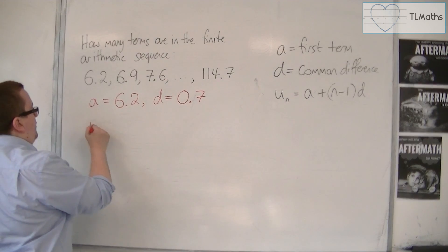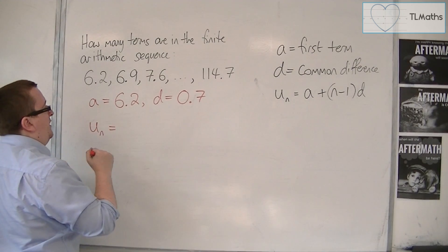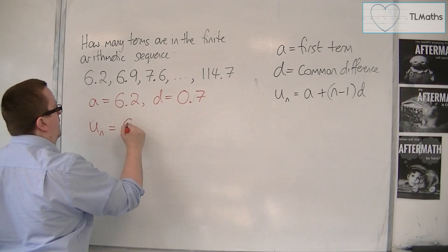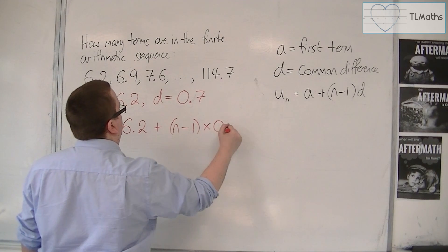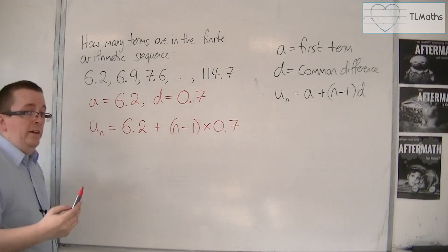So the nth term, u_n, is equal to A plus n minus 1 times D. So that's my nth term.